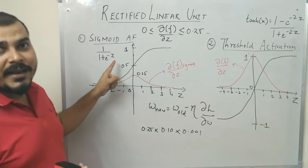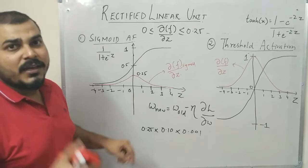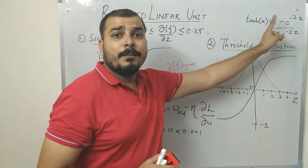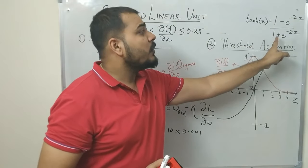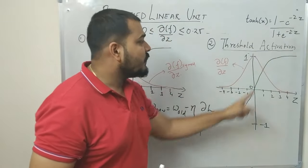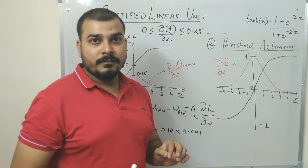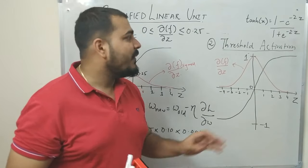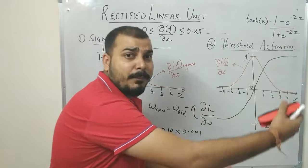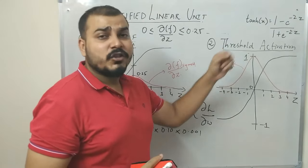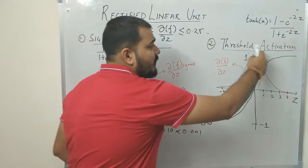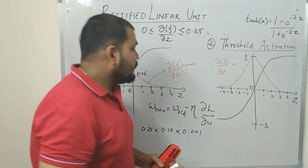If I take the example of the threshold activation function (tanh), the equation is given by 1 minus e to the power of minus 2z divided by 1 plus e to the power of minus 2z. When I pass my z value, this transforms the value between minus 1 to plus 1. But similarly, if I implement tanh in each and every layer, during back propagation, the derivative of this threshold activation function will be ranging between 0 to 1, as indicated by the red curve line.